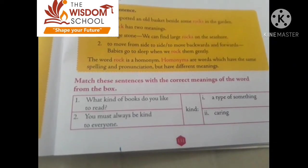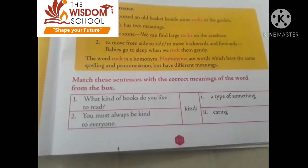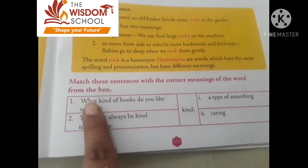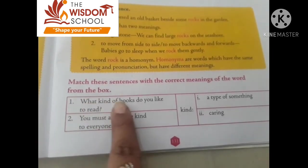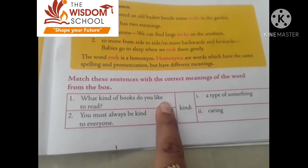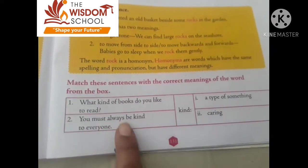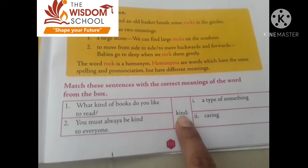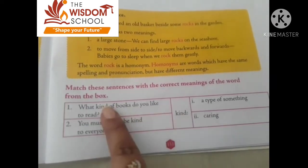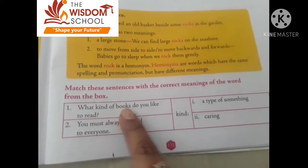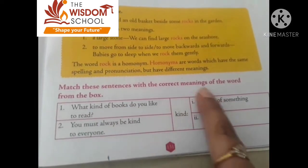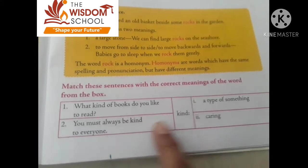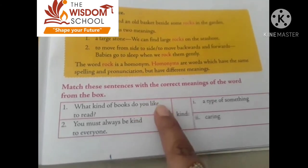Match these sentences with the correct meaning of the word from the box. 'What kind of books do you like to read?' — here 'kind' means a type of something. 'You must always be kind to everyone.' — here 'kind' means caring. So match these meanings accordingly.